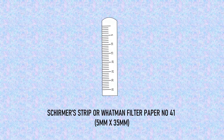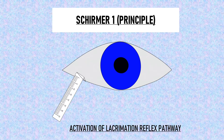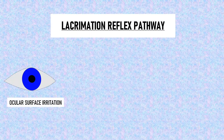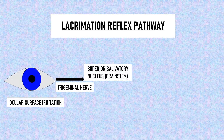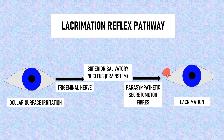In Schirmer 1, the Schirmer's strip is folded at the end and placed in the inferior fornix. This filter paper acts as an irritant on the eye and activates the lacrimation reflex pathway. When the lacrimation reflex pathway is activated, afferent signals are carried via the trigeminal nerve to the superior salivatory nucleus in the brain stem. The efferent signal is then carried via the parasympathetic secretomotor fibers to innervate the lacrimal gland, and tears are produced.